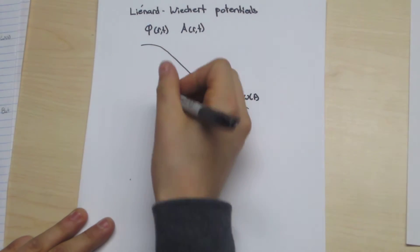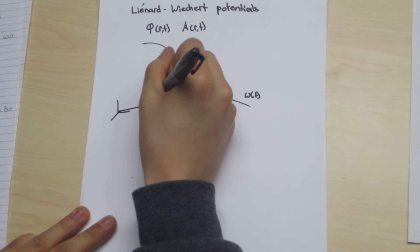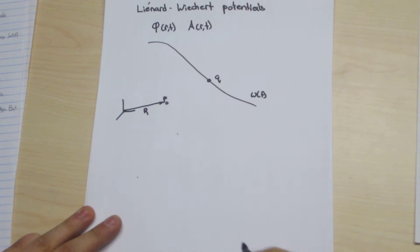Here we will use an arbitrary point p-naught, a distance r from the origin, to define the potential.